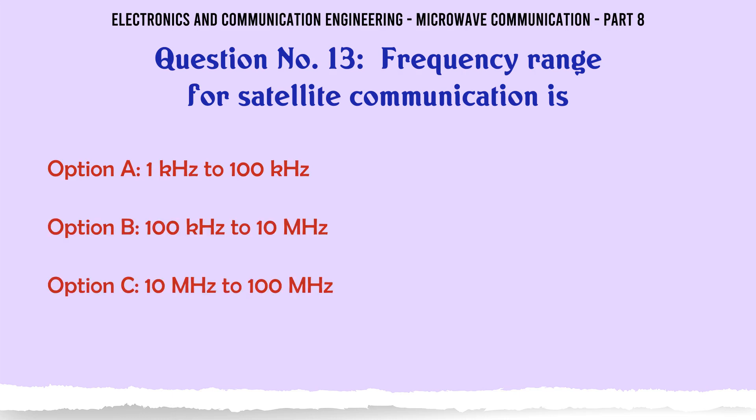Frequency range for satellite communication is — A. 1 kHz to 100 kHz, B. 100 kHz to 10 MHz, C. 10 MHz to 100 MHz, D. 1 GHz to 30 GHz.